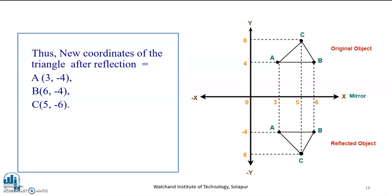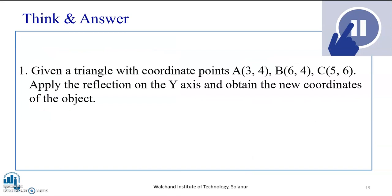I want you all to pause the video and solve this problem. The problem given is for the same triangle with coordinate points A(3,4), B(6,4), and C(5,6), but here you are expected to apply reflection along the y-axis and obtain the new coordinates. The previous example was for reflection along the x-axis; this one is for the y-axis. Pause the video and solve the question.